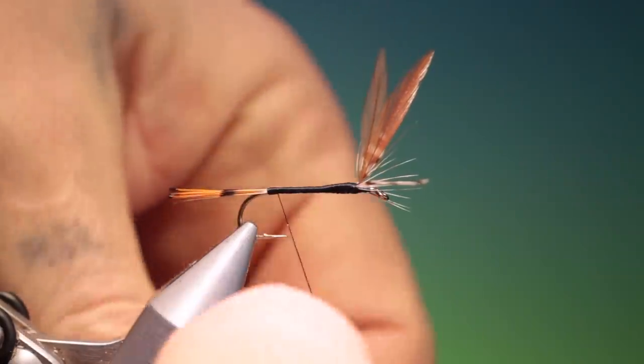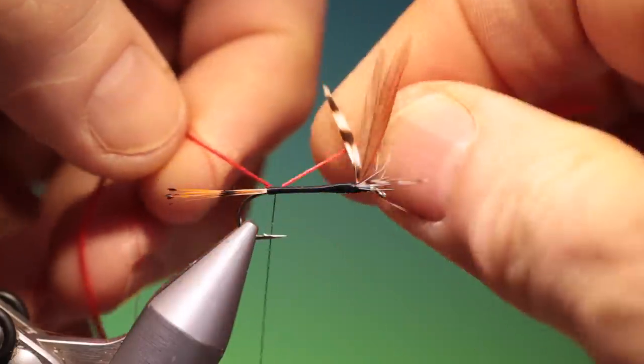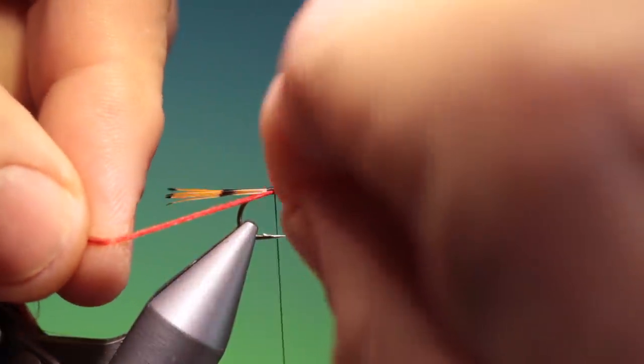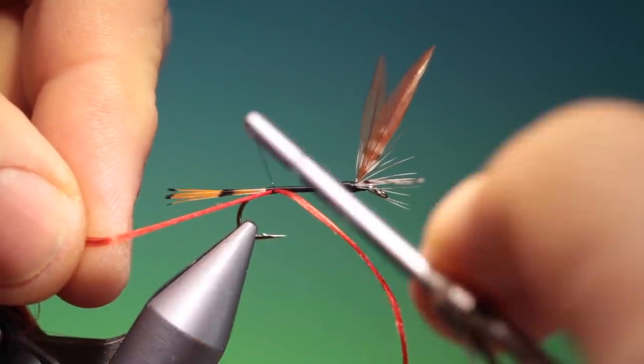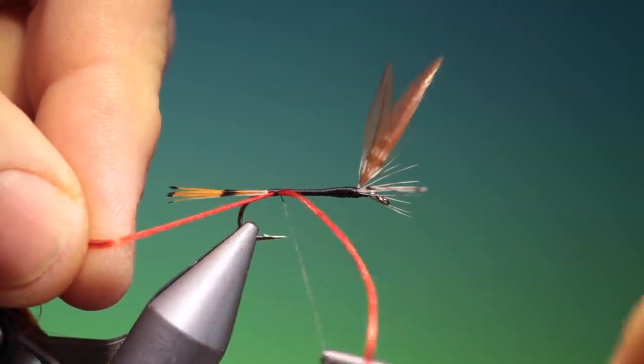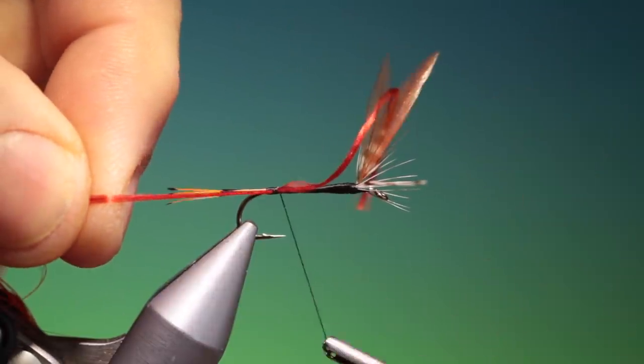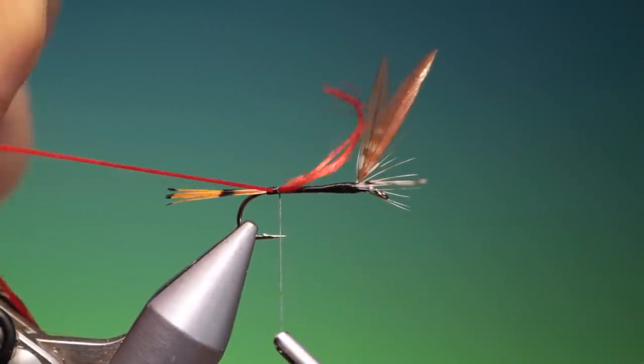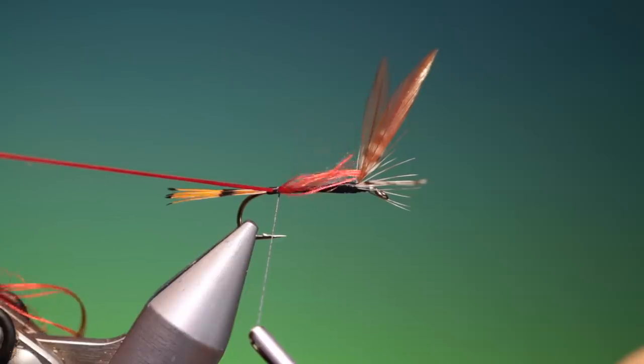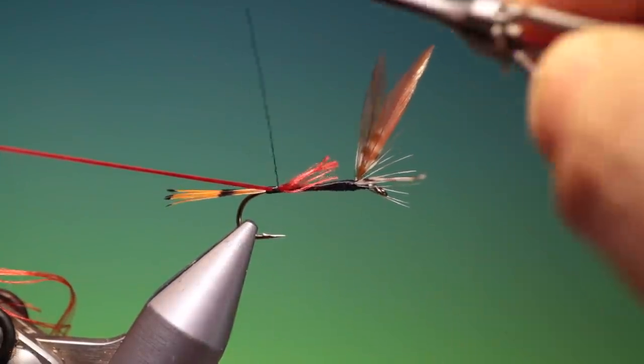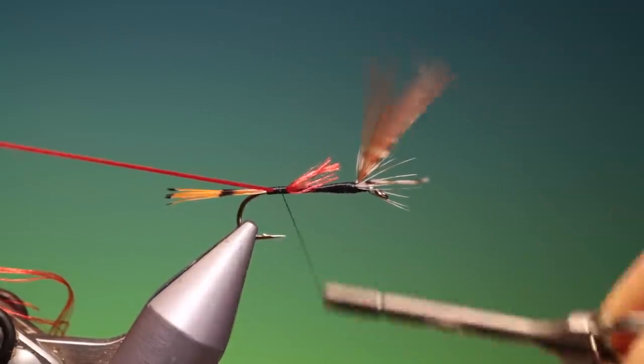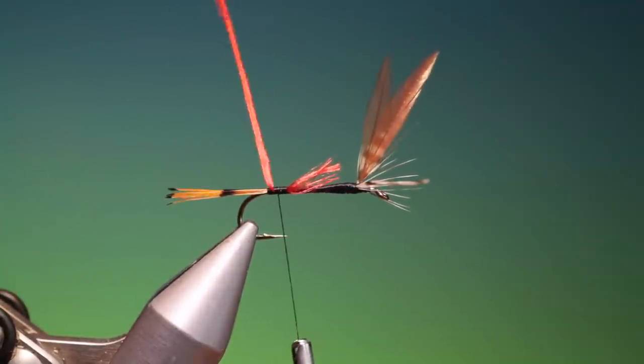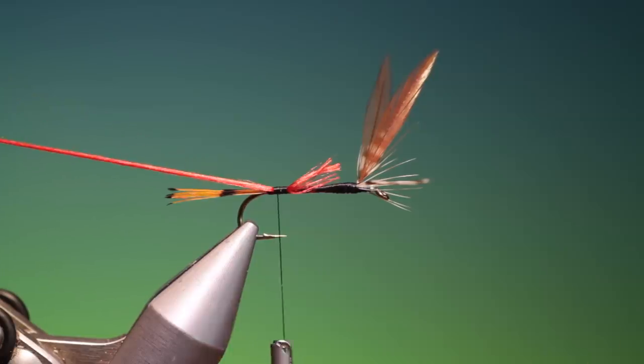I've got some red floss. This is a red Panama. The original had a natural raffia body. So we'll just go up here. We can pull that through. That's good. We'll just put that out of the way for the time being.